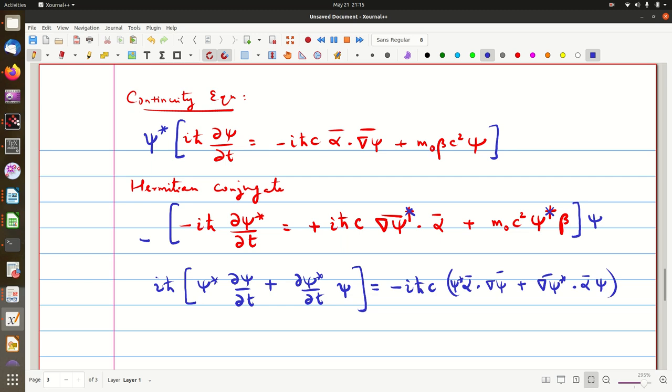And here you have ψ* β ψ. And here you have ψ* β ψ. So if there is a minus sign, that goes to zero. So this is what we get.